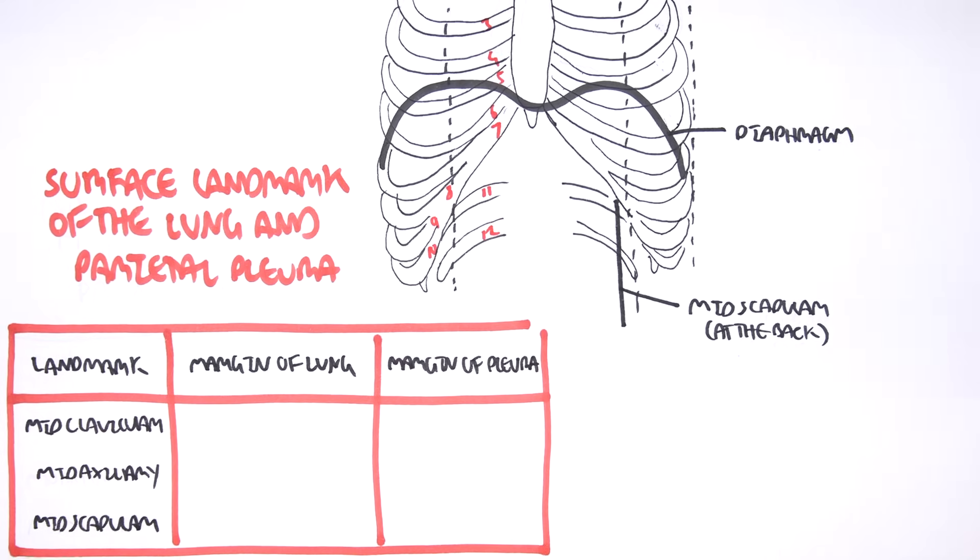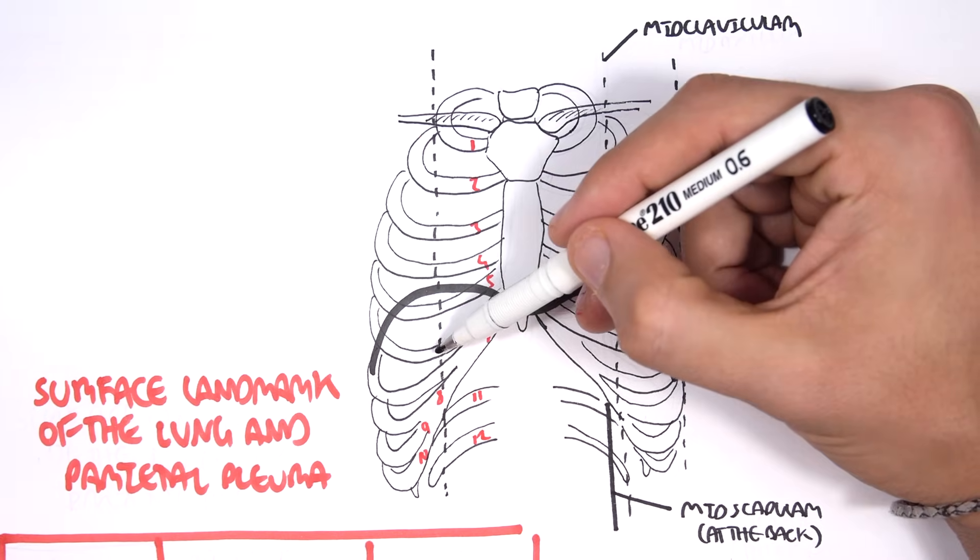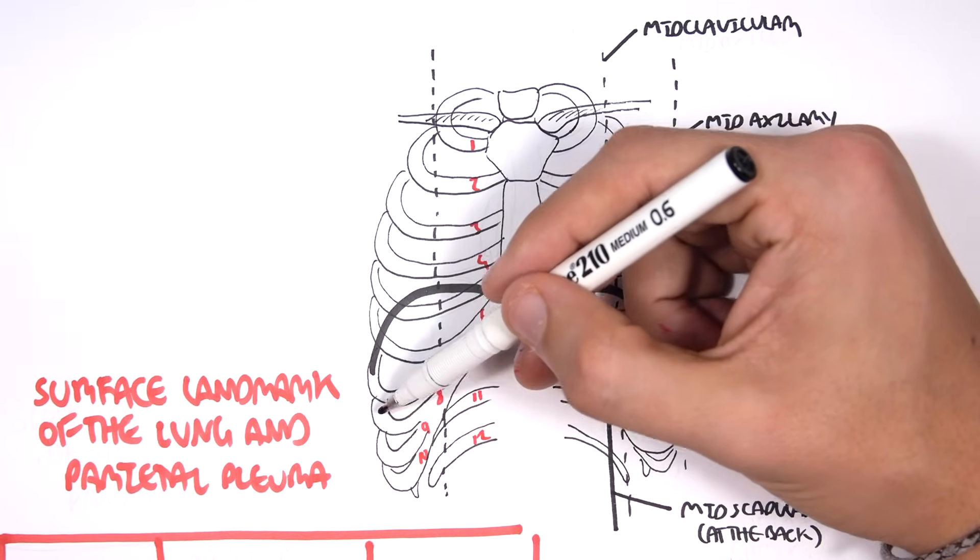So the margins of the lung, midclavicular, it goes to the sixth rib, mid axillary to the eighth rib, and mid scapula, the tenth rib.